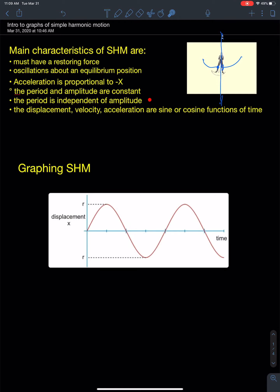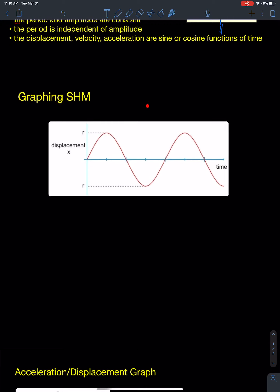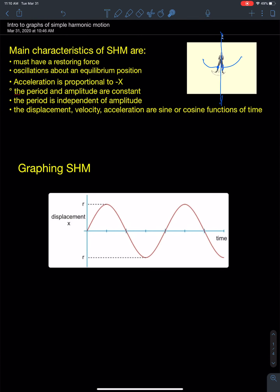The period is independent of the amplitude. That means that if I swung the guy 5 centimeters versus 10 centimeters or versus 2 meters, the period is always going to be the same — that was a unique thing that Galileo saw when he was looking at pendulums. The displacement, velocity, and acceleration graphs over time always exhibit a sine and cosine function, which you did as an activity in class. When you used video analysis to graph Simple Harmonic Motion, your graphs looked like this — a classic sine curve. In order to get a sine curve from the motion of this person, I'd have to start graphing from the equilibrium position.